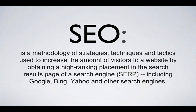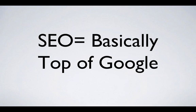I want to define what SEO is. I pulled this right from Google: it's the methodology of strategies, techniques, and tactics used to increase the amount of visitors to a website by obtaining a high-ranking placement in search engine result pages — sometimes known as SERPs. Simply put, what you're looking for with SEO is to get to the top of Google. I don't think there's a real estate agent out there who wouldn't want to be on the first page of Google for whatever area they're marketing. Sure, Bing and Yahoo exist, but Google is really the one most people are using today.